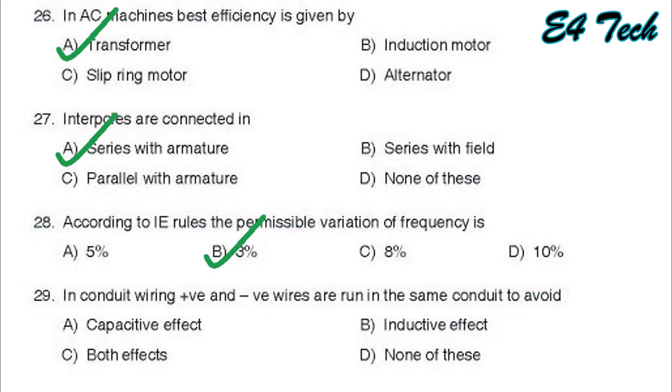Next, in conduit wiring, positive and negative wires are run in the same conduit in order to avoid capacitive effect, inductive effect, both effects. None of these. That is none of these, option D.